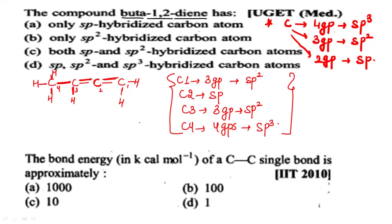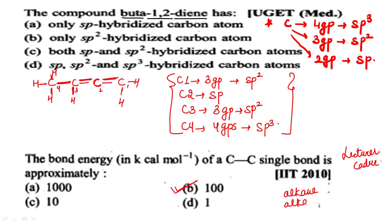So this is the way to solve questions based on hybridization. Just remember: four groups attached to carbon → sp3; three groups → sp2; two groups → sp hybridized. The next question is based on the bond energy of the C-C single bond, which is approximately 346 kJ/mol. This type of question has come in lecturer cater exams also, so remember the basic data for alkane, alkene, and alkyne — bond lengths and bond energies.